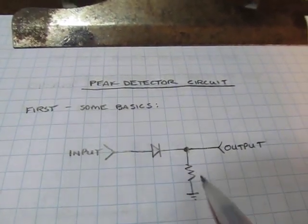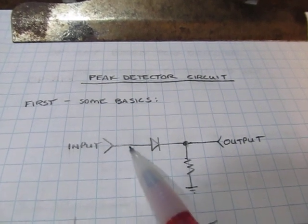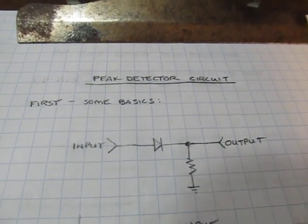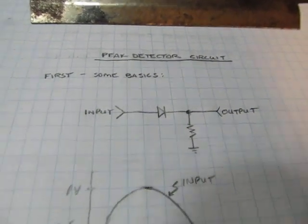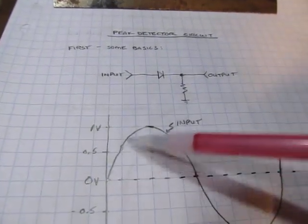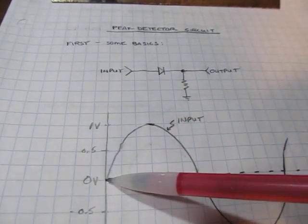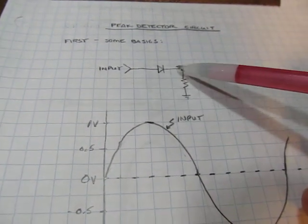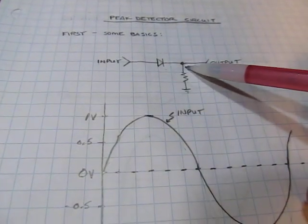We'll start off by just understanding what this little simple circuit would do, this simple series diode and resistor. We take a look at what that would do as the voltage comes in. Initially, when the voltage is at zero, there's going to be no current flowing. The diode will be off, so the output will be zero.